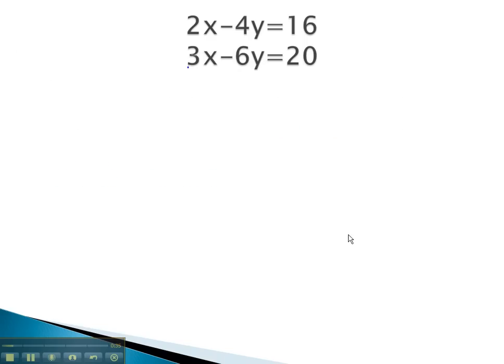In this first problem, let's try and get opposites in front of the x's. Notice the least common multiple of 2 and 3 is 6. This means we want 6x and negative 6x.